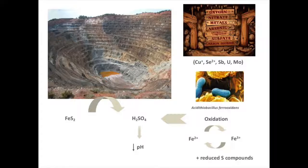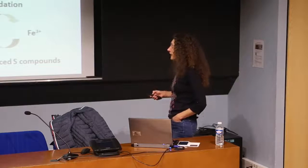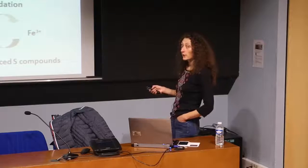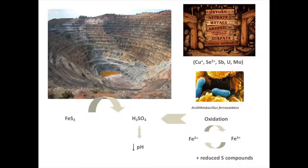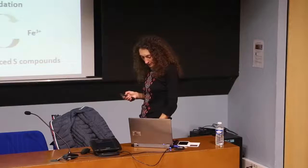One very famous acidophile is Acidithiobacillus ferrooxidans, a metabolically versatile bacterium. Under aerobic conditions it can oxidize iron to gain energy; under anaerobic conditions it can reduce iron(III) to iron(II) using reduced sulfur compounds as electron donors. It can exploit a wide variety of other metals as energy sources, making it and related organisms interesting for mining operations through bioleaching.